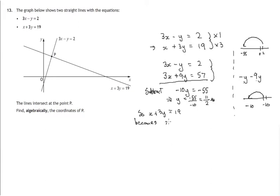So what does that become? Now that we know y is 11 over 2. So it becomes x plus 3 times 11 over 2 equals 19. So that's x plus 3 lots of 11 halves will be 33 halves equals, well let's change this to halves, 38 halves.